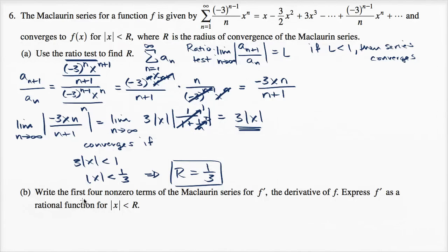Part B. Write the first four non-zero terms of the Maclaurin series for f prime, the derivative of f. Express f prime as a rational function for the absolute value of x being less than r, our radius of convergence.